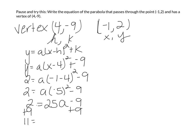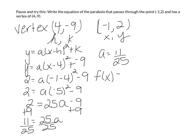Add 9 to both sides and I get 11 equals 25a. Since a is being multiplied by 25, divide by 25. I'll leave it as a fraction: a equals 11/25. Then I write my equation as a function of x: f(x) equals (11/25)(x minus 4) squared minus 9.